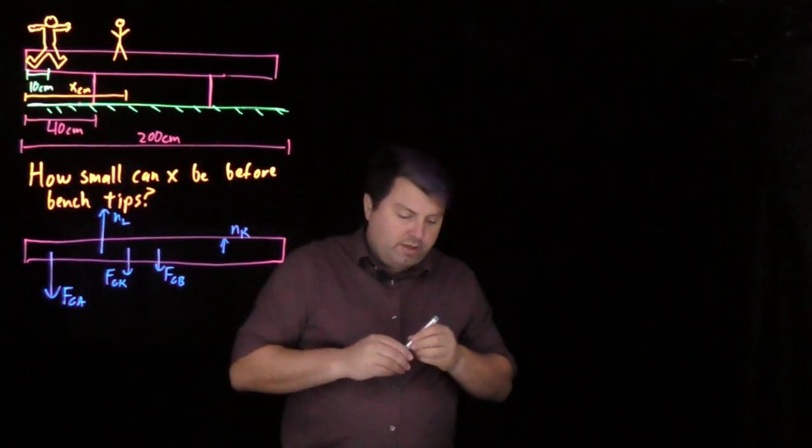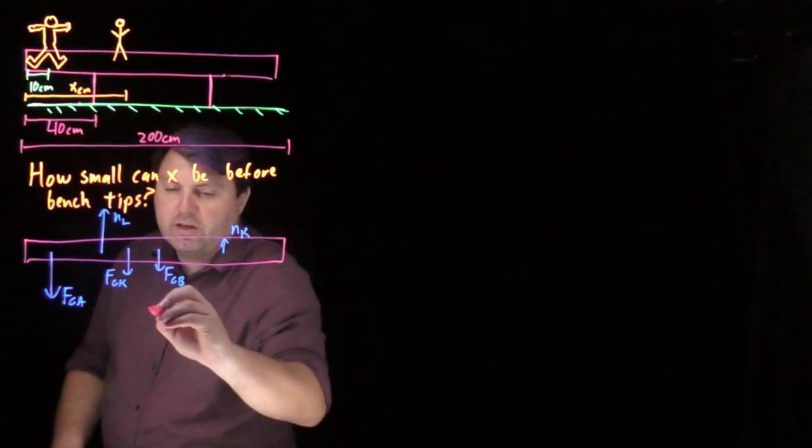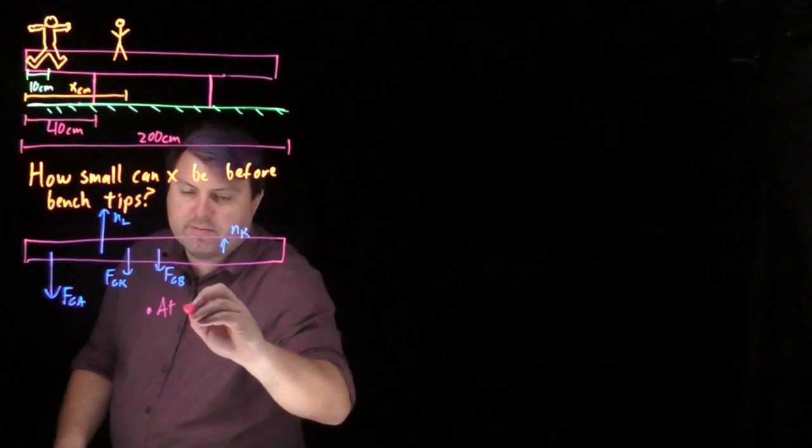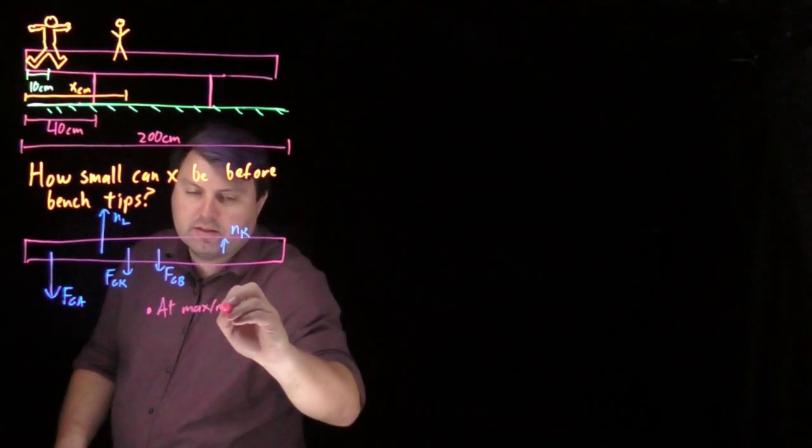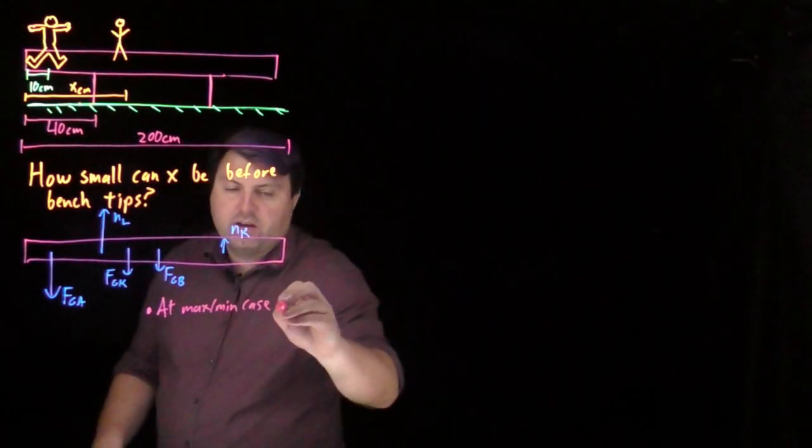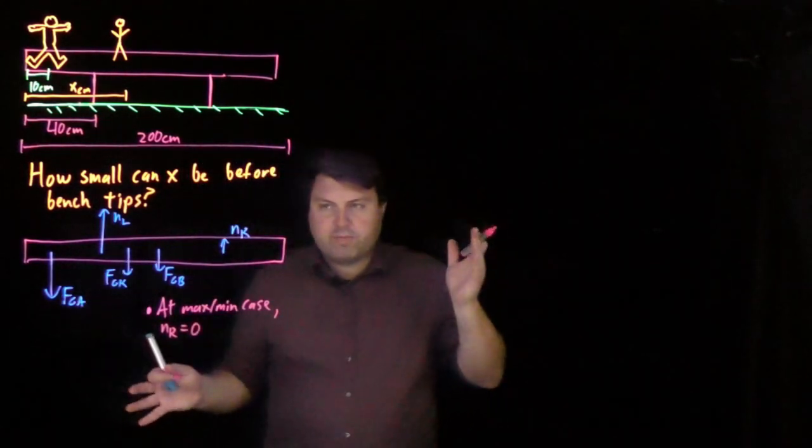But what we can do is we can figure out what this means. How small can x be before the bench tips? So at the maximum case or maximum or minimum case, the maximum precarity and the minimum value of x, the normal from the right is equal to zero, right? It's just about to tip.